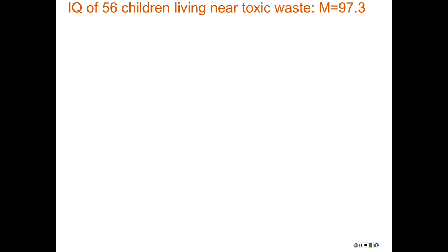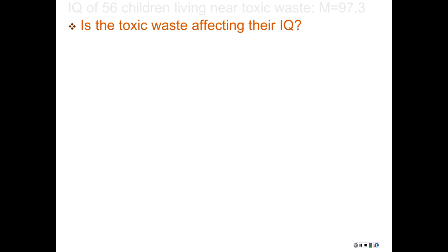Here's the kind of question — you don't have to know the answer to this perfectly, but this is the kind of question we would answer with probability once we start doing inference. We'll do something very much like this in a few weeks. So imagine that you know that the IQ of 56 children — a sample of children, not all children — who live near some toxic waste, and the mean is 97.3.